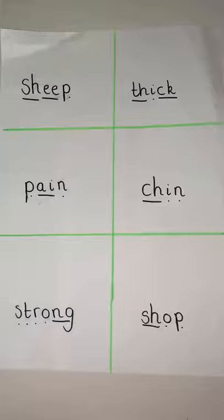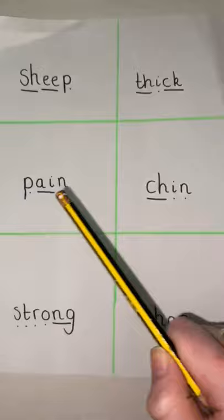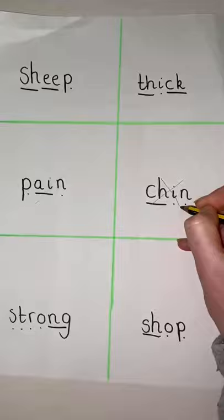So the next one is chin. Oh, let's see if I can find the ch sound at the start of any of the words. Chin. Ch, i, n. Chin. Yes, so I can cross that one off.